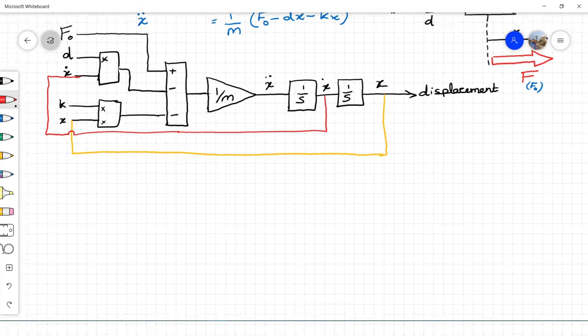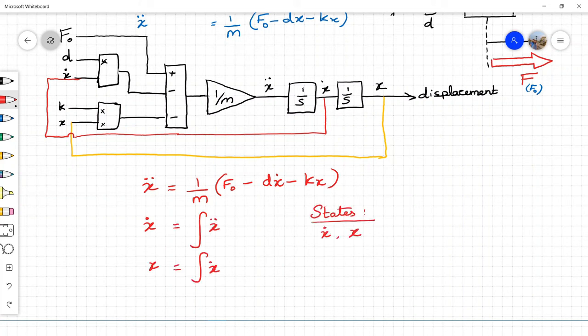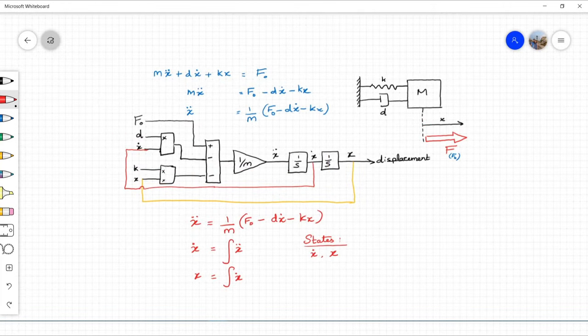To summarize, we now have the equations of motion to model the system. We calculate ẍ, ẋ, and x. Now we have learnt how to create an open loop model for spring mass damper system. In the next chapter, let us look at how to convert this open loop model into a Python model and simulate it.